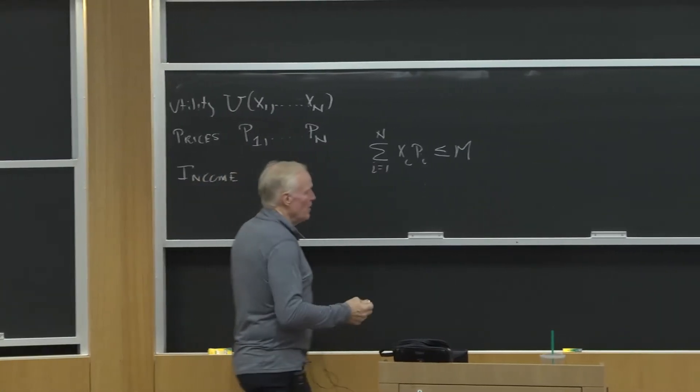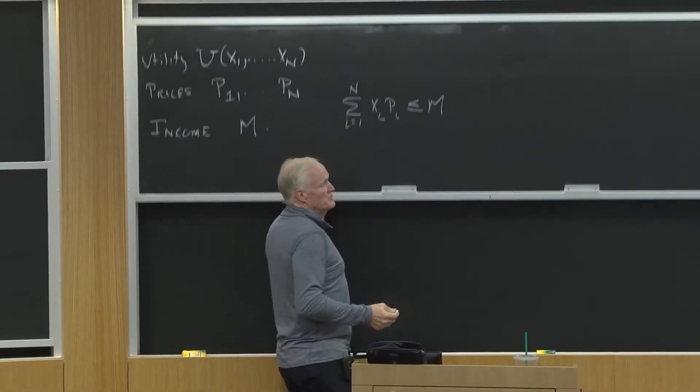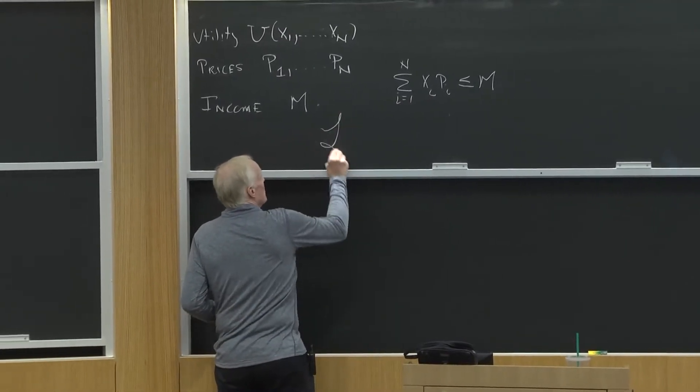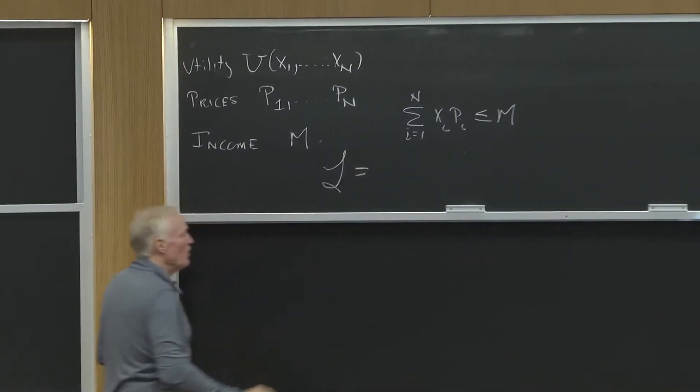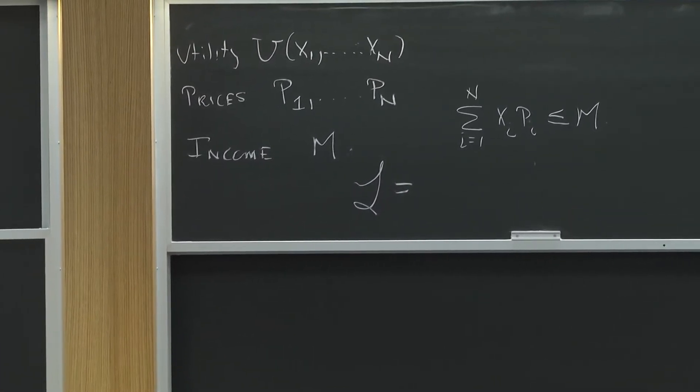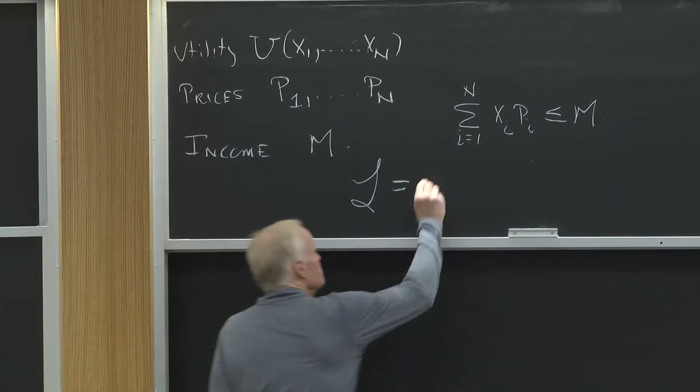Now the most typical way to solve this problem is to set up what's known as a Lagrangian, which I think most of you should know. Lagrangian is just a way of solving a constrained maximization problem, and our consumer is going to be interested in maximization.